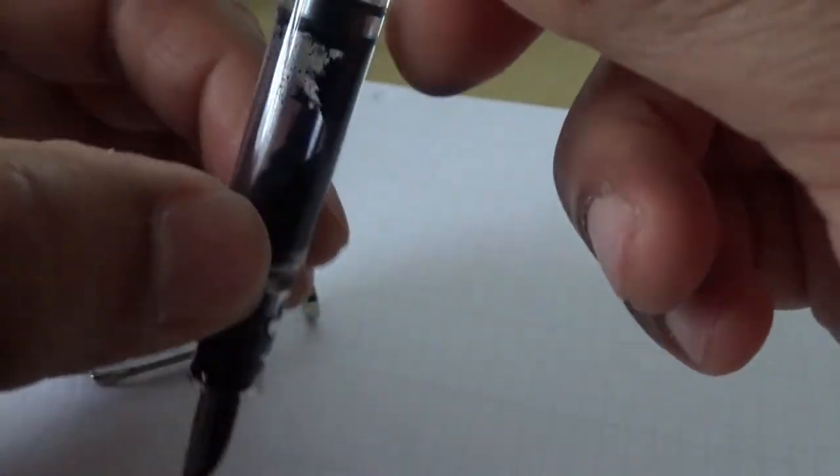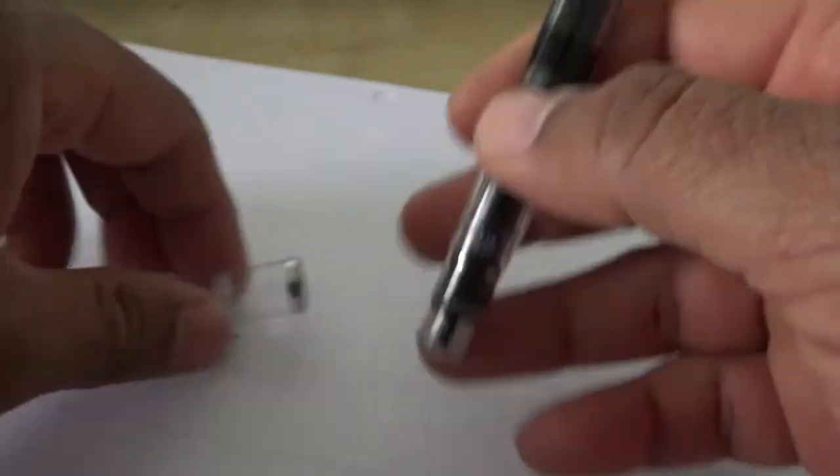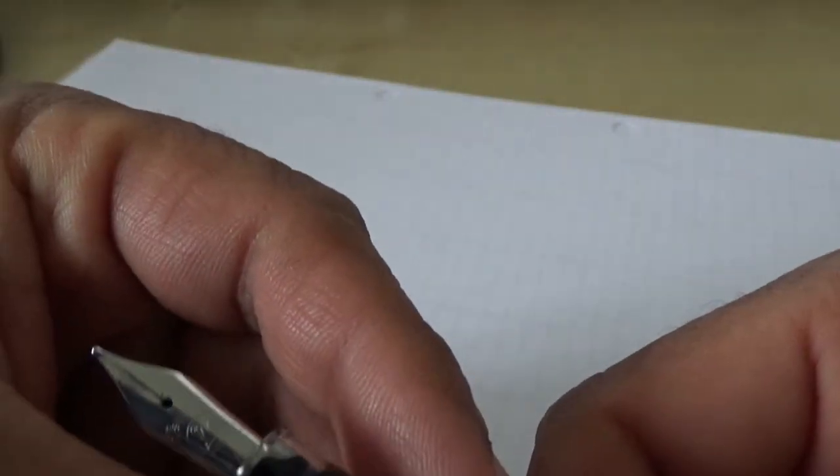relatively straight. You've got the piston turning knob there. You can see I've already got it filled with ink—this is Montblanc Mystery Black. Looking at the nib, it's a relatively small nib,